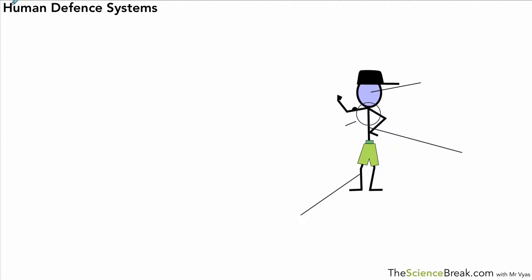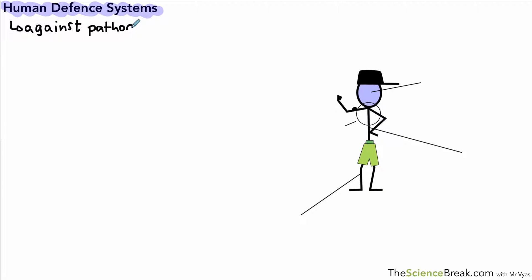Today we're looking at human defense systems against pathogens. We're going to look at two kinds of methods: one is what we call non-specific and the other is more specific. The human defense systems — what are we defending against? We're defending against microbes called pathogens, and pathogens are any microorganism that causes a disease.